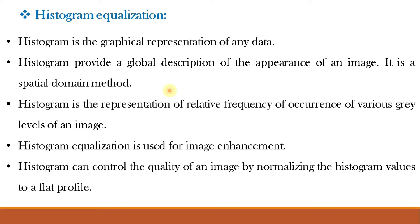The histogram of a digital image with intensity levels in the range 0 to L minus 1 is a discrete function h(rk) = mk, where rk is your input intensity level. So h(rk) equals the number of pixels for different gray levels, where rk is the kth intensity value and mk is the number of pixels in the image with intensity rk. Histograms are the basis for numerous spatial domain processing techniques, and histogram manipulation can be used for image enhancement by normalizing or equalizing the histogram values to a flat profile.